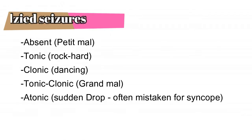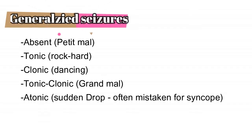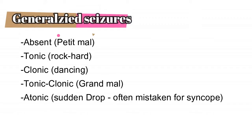There are multiple types of generalized seizures. The first is called absent seizure, also known as petit mal seizure, where the patient is suddenly going to stare into space and not say anything — frozen in time — and then proceed to talk from where he stopped, not knowing that he had a seizure at all.